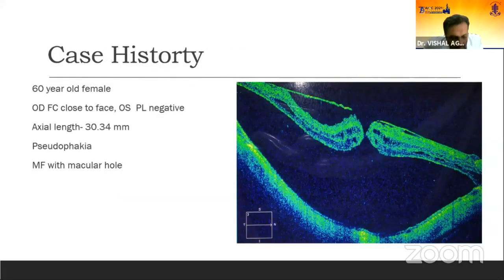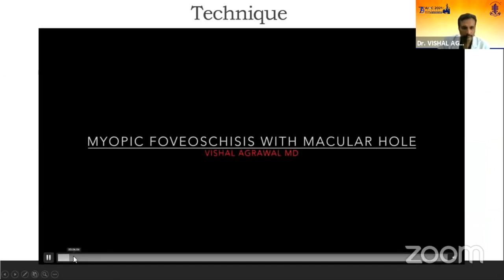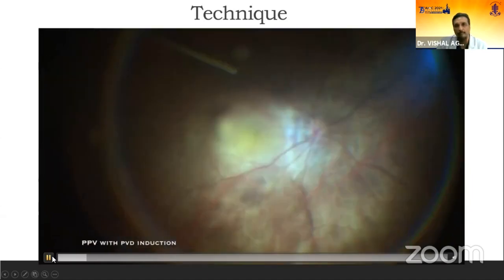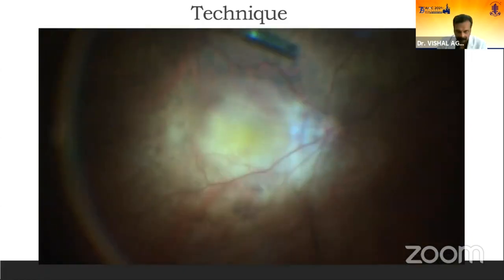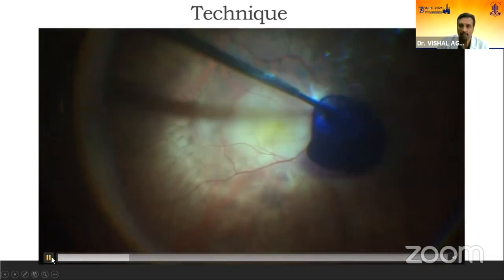Based on what we have learned over the past few years, we developed a common protocol for all these cases. To exemplify: this is a 60-year-old female one-eyed patient whose right eye vision was finger-counting close to face. Axial length was 30.34 mm and the eye was pseudophakic. Diagnosis was myopic foveoschisis with macular hole. We made the ports around 4.5 to 5 mm from the limbus. In this highly myopic eye, the low contrast of the posterior pole and visible sclera are notable. After inducing PVD, multiple staining with triamcinolone acetonide is done to ensure no vitreous is left.